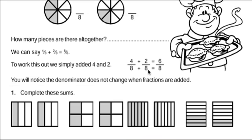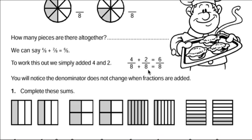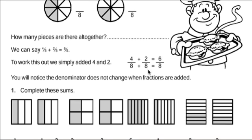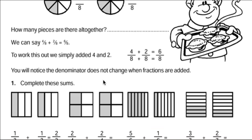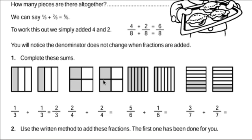Now, if you have to do it for yourself, you're probably going to use denominators that are less than 8 — let's hope, right? Here, we've got 1 part out of 3, 1 third, plus another third. 1 third plus another third is 2 thirds.